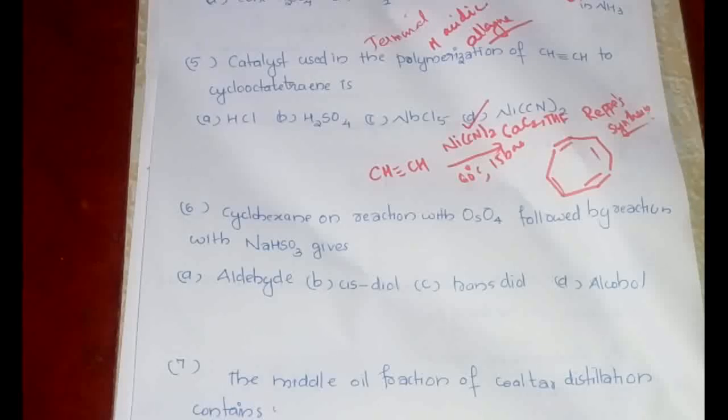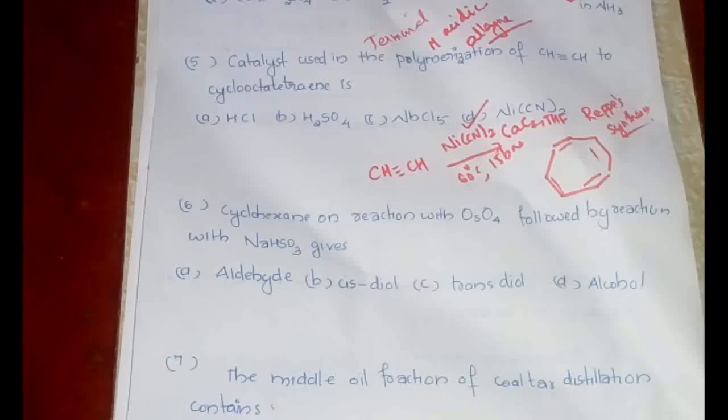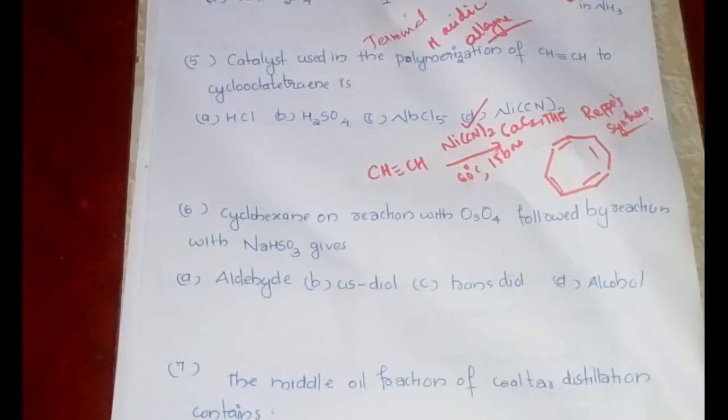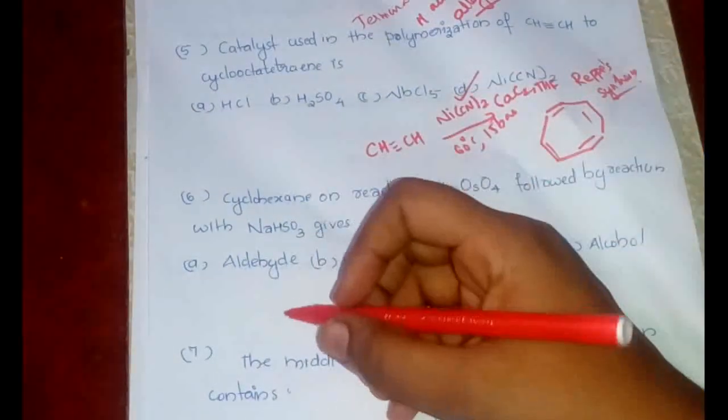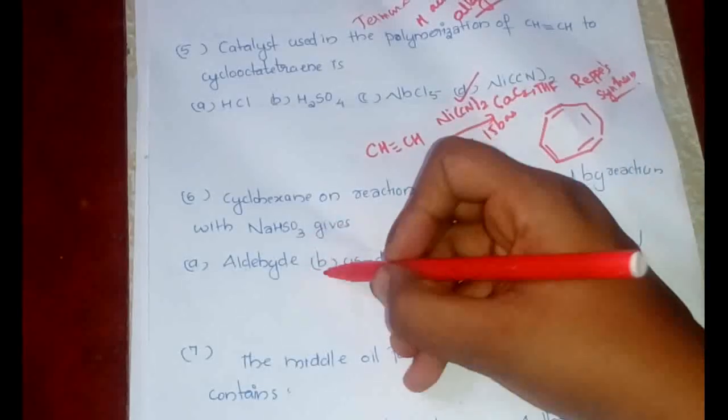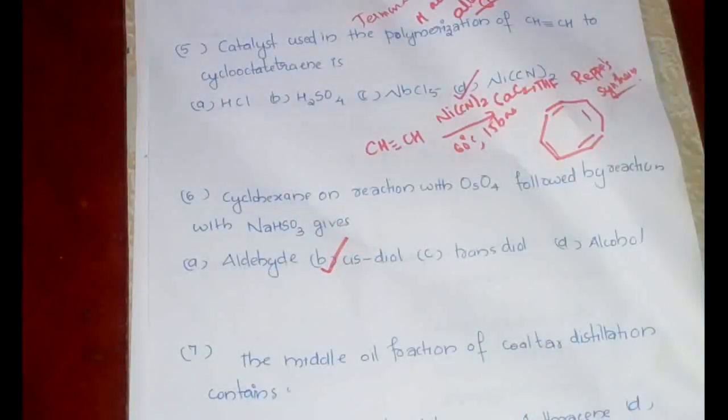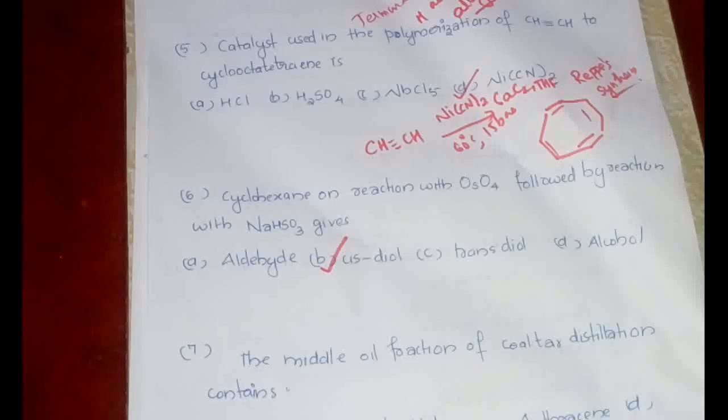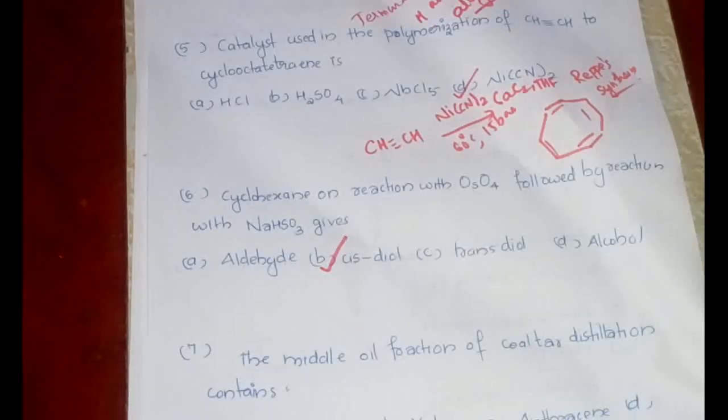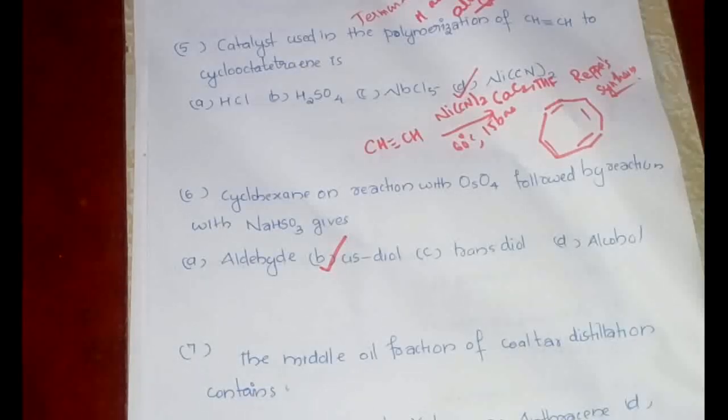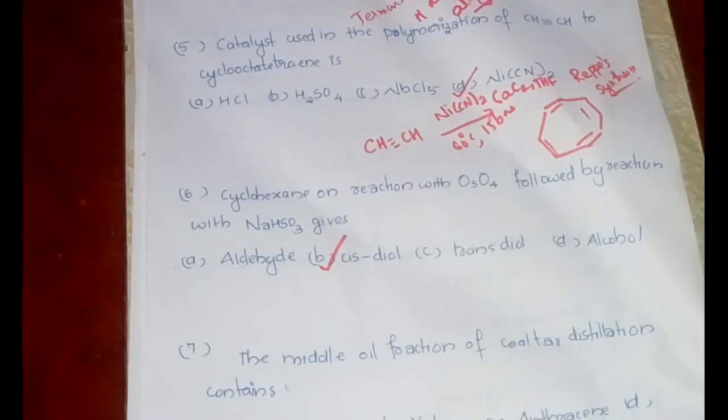Next question: cyclohexene on reaction with OsO4 followed by NaHSO3 gives what? This is a very important question. The answer would be cis-diol, because whenever we have OsO4 or KMnO4 oxidation, we will be having cis-diol. Both KMnO4 and OsO4 as such, in certain cases with some other reagents there can be exception in the stereochemistry, but in this form they will be forming only cis-diols.